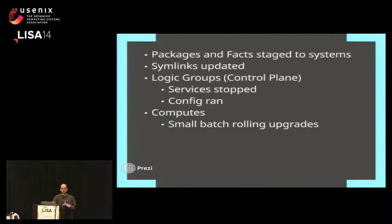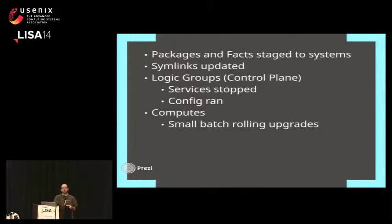Within the control plane of OpenStack, certain things can be taken down at will — things that read content off message buses rather than being contacted directly over an API. We shut those processes down first, then run local configuration on the systems to bring them back up along with any changes configuration management might want to put in place. Once those services are back up, we go after the API services — the ones with direct contact — rolling through them in small sets to allow our load balancers to learn that something is no longer responding and route traffic elsewhere. We take them down one at a time, apply configuration, and bring them back up.